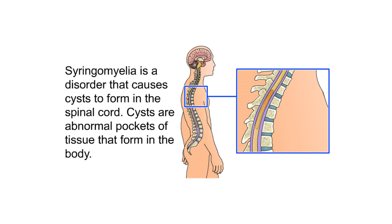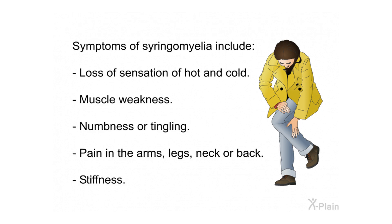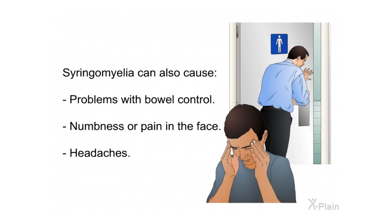Syringomyelia is a disorder that causes cysts to form in the spinal cord — abnormal pockets of tissue that form in the body. Symptoms include loss of sensation of hot and cold, muscle weakness, numbness or tingling, pain in the arms, legs, neck, or back, stiffness, problems with bowel control, numbness or pain in the face, and headaches.